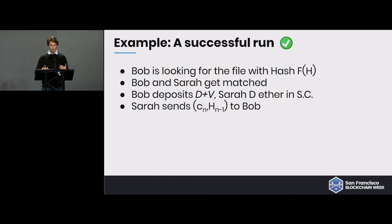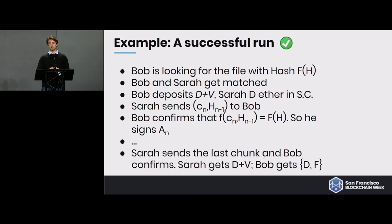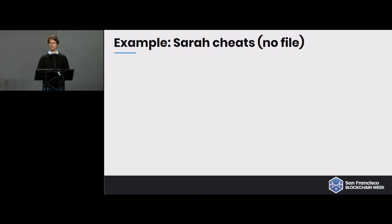Once both deposits are in place, they start the protocol. Sarah sends the chunk at the very end with the intermediate hash to Bob, Bob verifies it's correct and gives the acknowledgement. They do that iteratively until the end, then Sarah sends the last chunk, Bob checks it's okay, and they go on-chain again to get the deposits back. Bob gets the file and Sarah gets the file value — she has been paid for it.